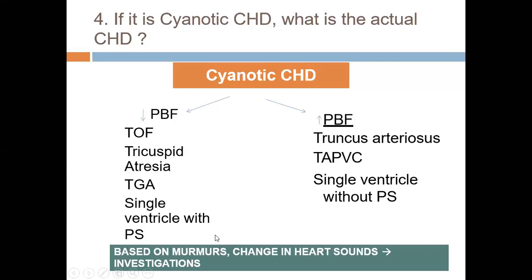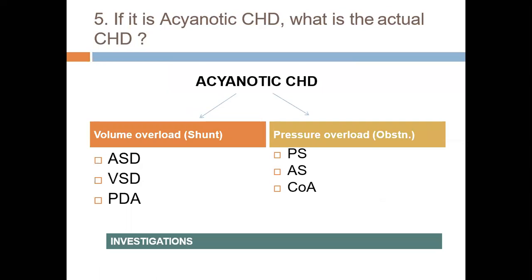To differentiate the two groups of cyanotic CHD, start with clinical assessment — murmur type will differentiate most cases. If not, examine heart sounds (first and second). Then proceed to investigations: ECG, chest X-ray, echocardiography, and if needed, cardiac catheterization. This allows you to categorize and plan treatment accordingly.